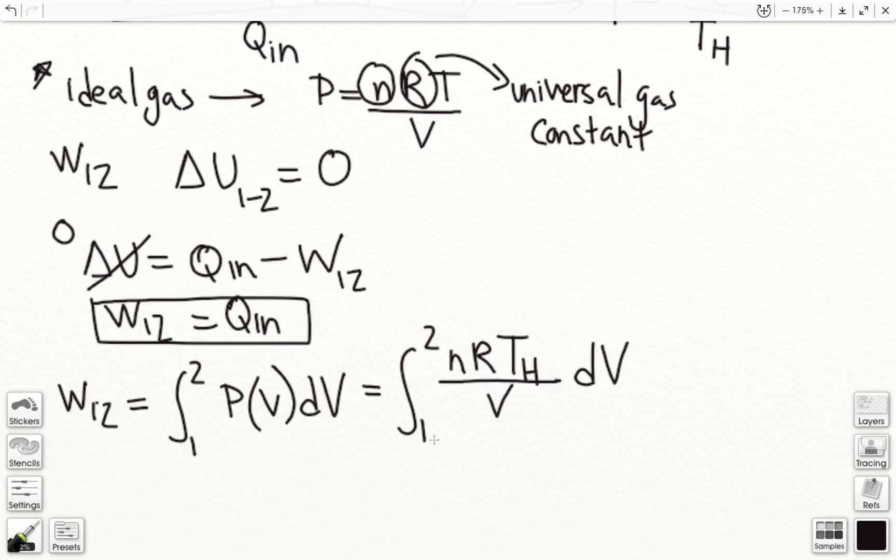So if you work out the math and take the integral of 1 over v, this will simplify to nRTh ln of v2 over v1. Okay, so that is the work from 1 to 2.